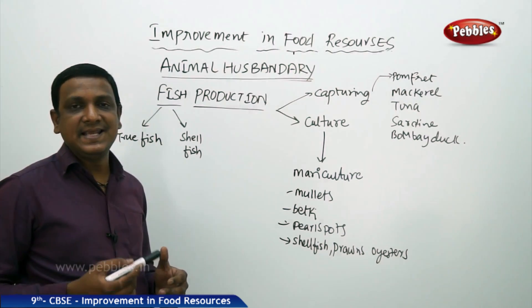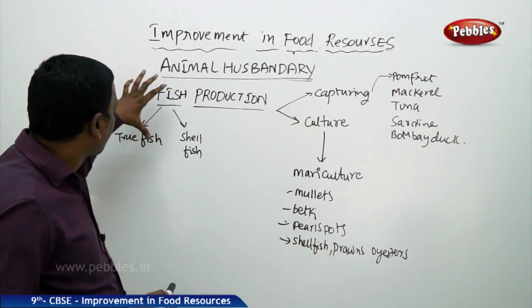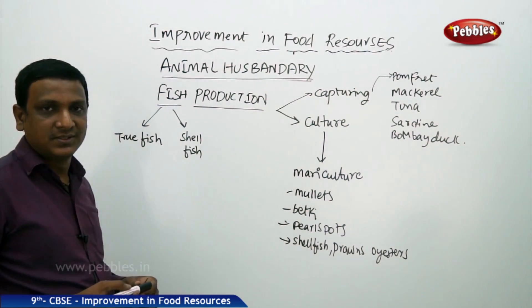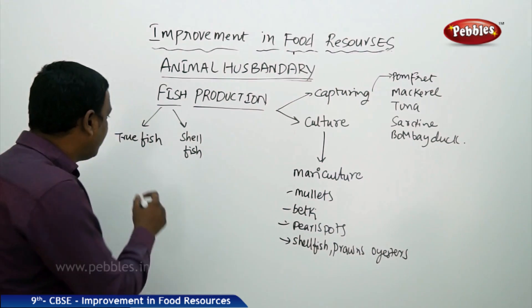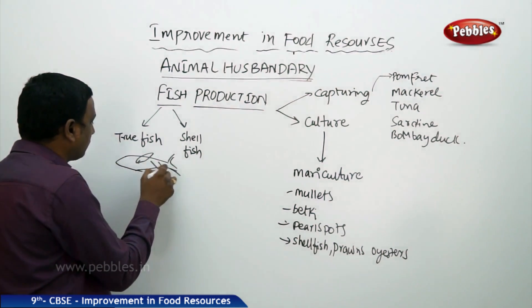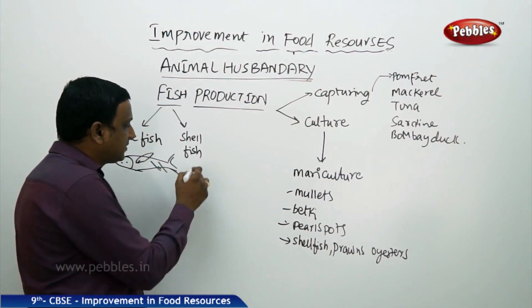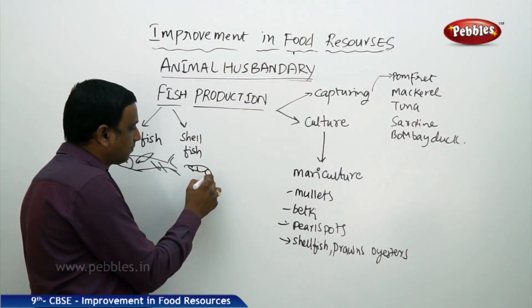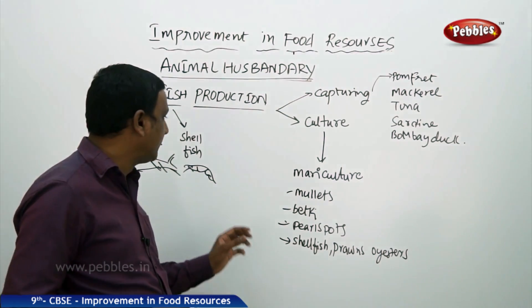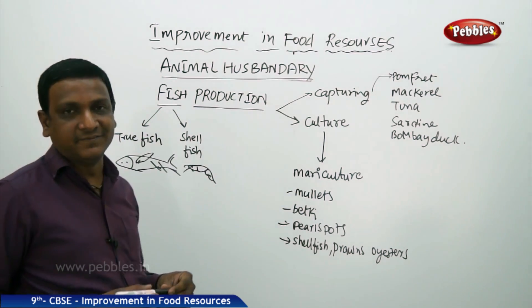We find marine fishes in seas and oceans. There are two different categories of fish: true fish and shellfish. A true fish has fins. Shellfish includes prawns, oysters, crabs — all of these are called shellfish. Again, they can be freshwater or marine.